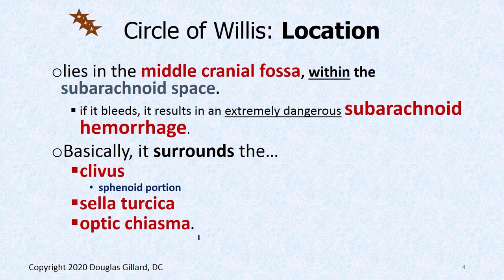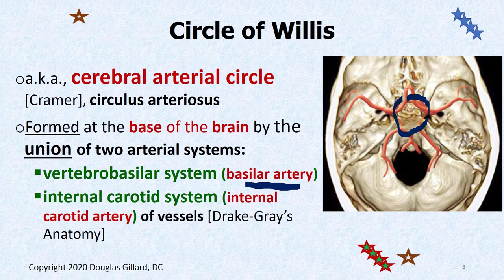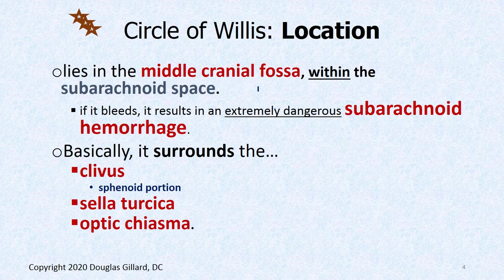It's located in the middle cranial fossa. Remember the fossae — there's the anterior, middle, and posterior cranial fossa. The circle of Willis lives in the middle cranial fossa. Technically it's within the subarachnoid space, so if you do get a bleed in this region, you've got yourself a subarachnoid hemorrhage, which is extremely dangerous.